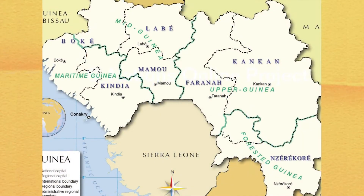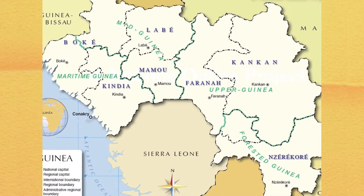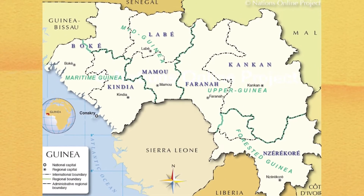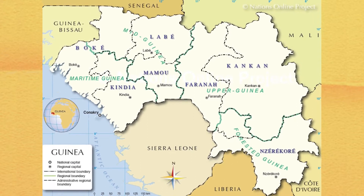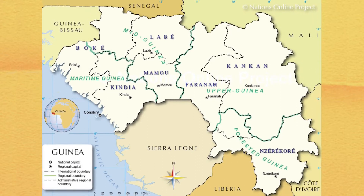Guinea is divided into four main regions: Maritime Guinea, also known as Lower Guinea or the Basel-Cote Lowlands, populated mainly by the Susu ethnic group; the hilly mountainous Futa Jalon, that runs roughly north-south through the middle of the country, populated by Fulis; the Sahelian Upper Guinea to the northeast, populated by Malinke; and the forested jungle regions in the southeast, with several ethnic groups.